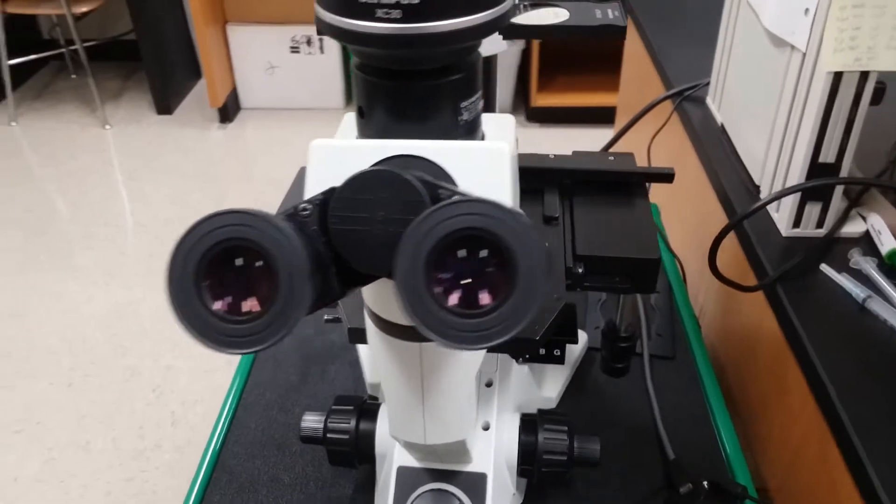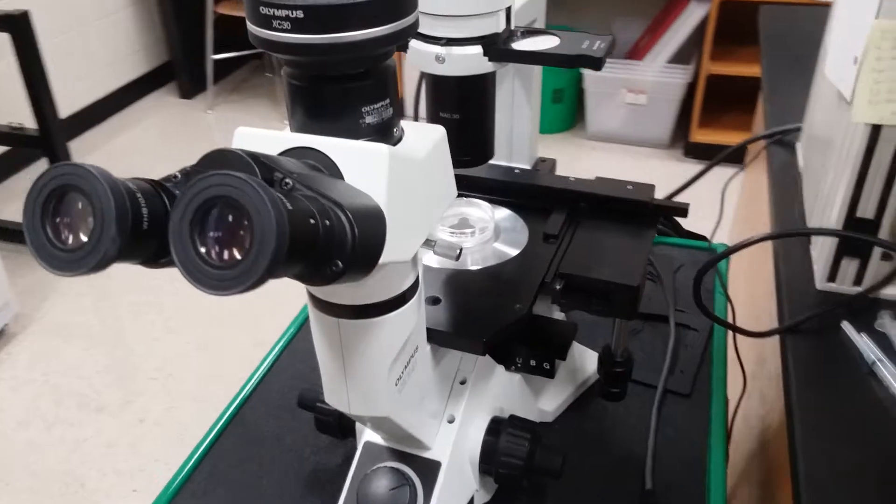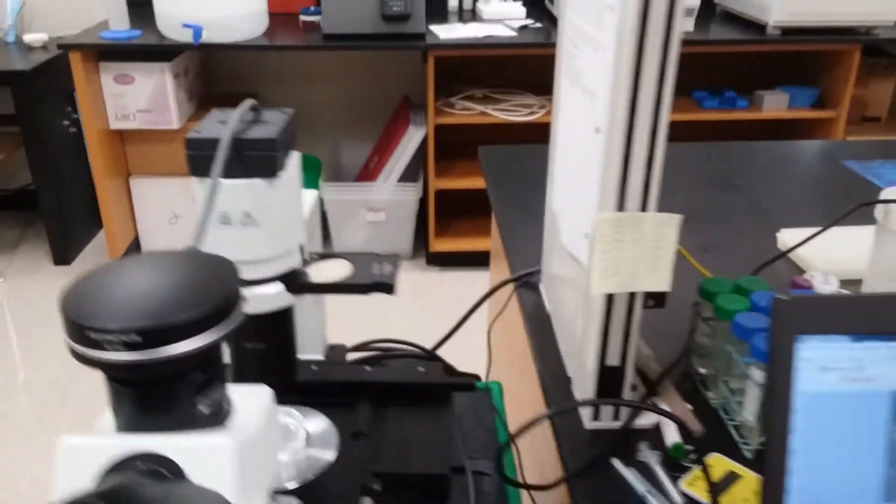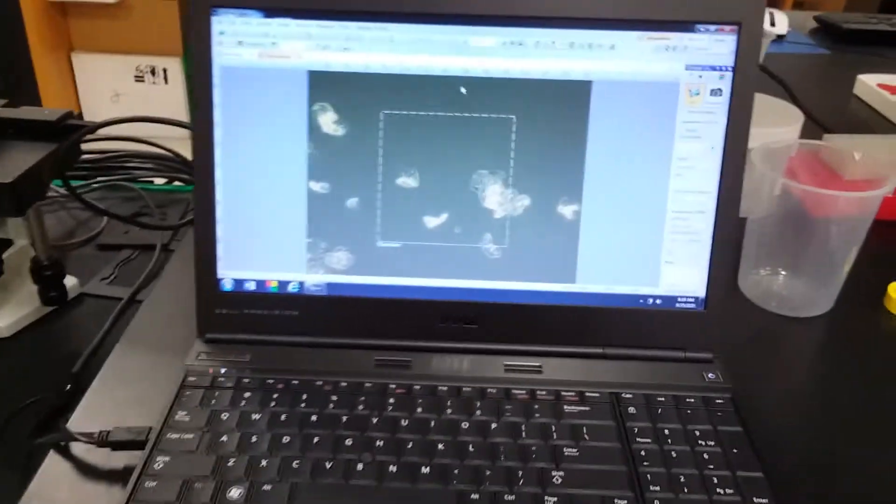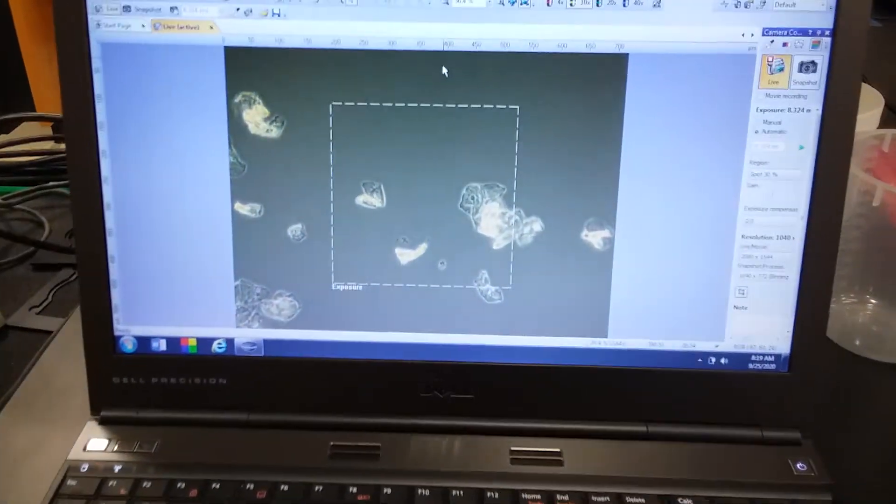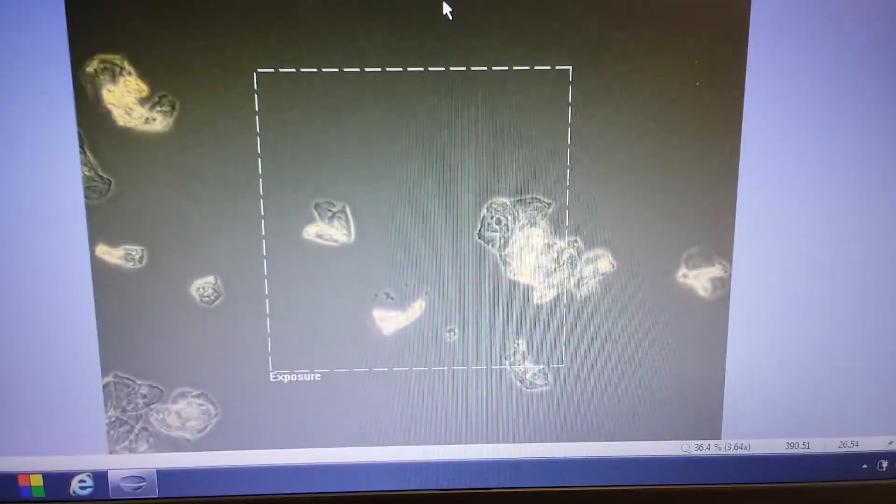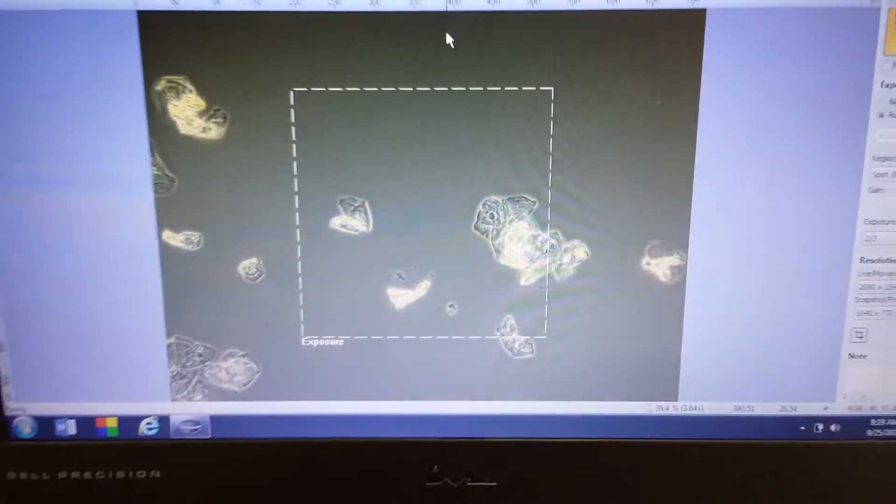So here's our microscope, and I've taken the C60 and put it on there. It is attached to a camera, which allows us to view the field of view on a computer, and so we can see that there are some beautiful cells there, so we can proceed.